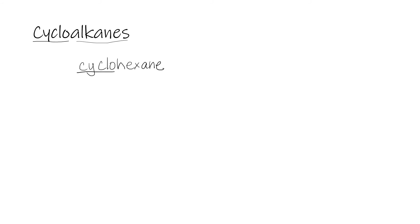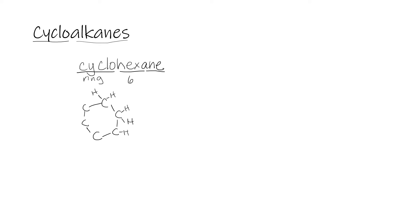In cyclohexane, the prefix 'hex' tells us there are six carbons, and '-ane' tells us it's an alkane with all single carbon-carbon bonds. Drawing it out: one, two, three, four, five, six carbons with bonds between all of them to form a ring. Since each carbon in the ring is bonding to two other carbons, each one then bonds to two hydrogens.